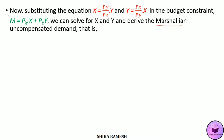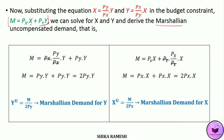The budget constraint is m equals Px multiplied by x plus Py multiplied by y. Substituting in the place of x we get m equals Px multiplied by Py by Px multiplied by y, plus Py multiplied by y. Here Px and Px cancel, so we get m equals Py times y plus Py times y, which equals 2Py times y. Solving for y we get y equals m divided by 2Py. This is the Marshallian demand for good y.